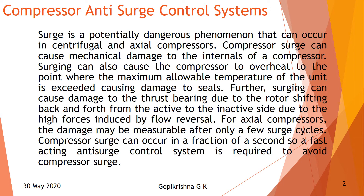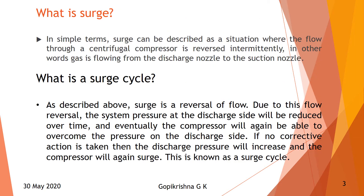Compressor surge can occur in a fraction of a second, so a fast anti-surge control system is required to avoid compressor surge. Simply, in simple terms, surge can be described as a situation where the flow through the centrifugal compressor is reversed intermittently — in other words, gas is flowing through the discharge nozzle back to the suction nozzle. This is called a surge cycle. The surge is a reverse flow — once the discharge nozzle opens and flow reverses.